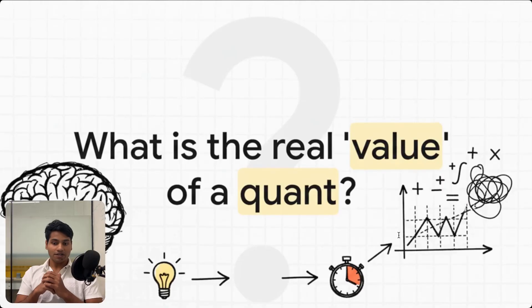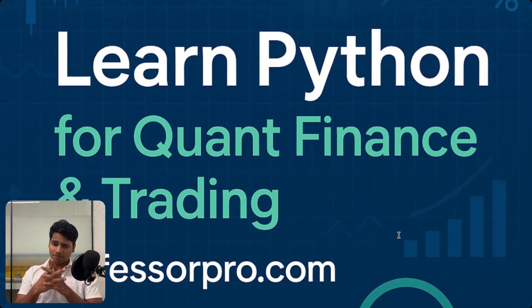So all of this leaves us with one final and really important question: If the models are flawed and the humans are fundamentally unpredictable, then what is a quant really for? Maybe, just maybe, their most valuable tool isn't a differential equation, but the humility and judgment to know exactly when to stop trusting the math and start trusting their own common sense.